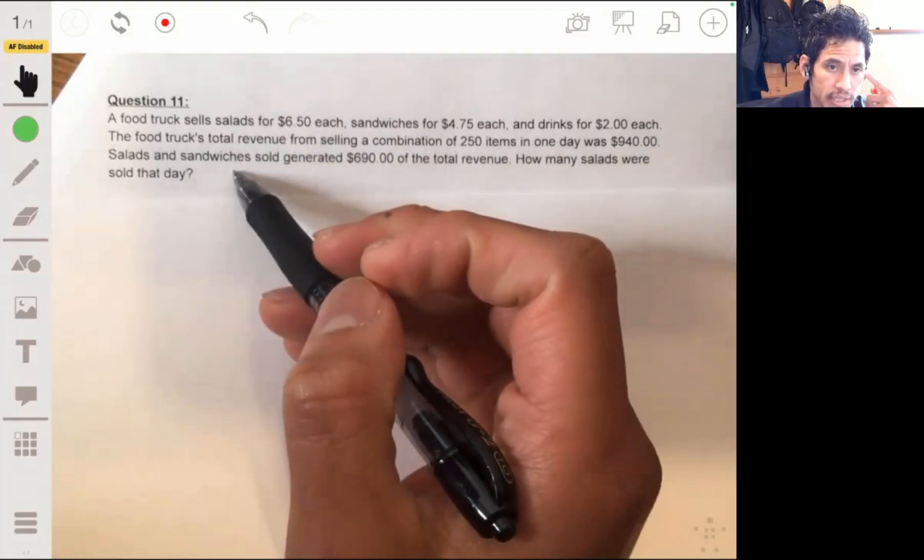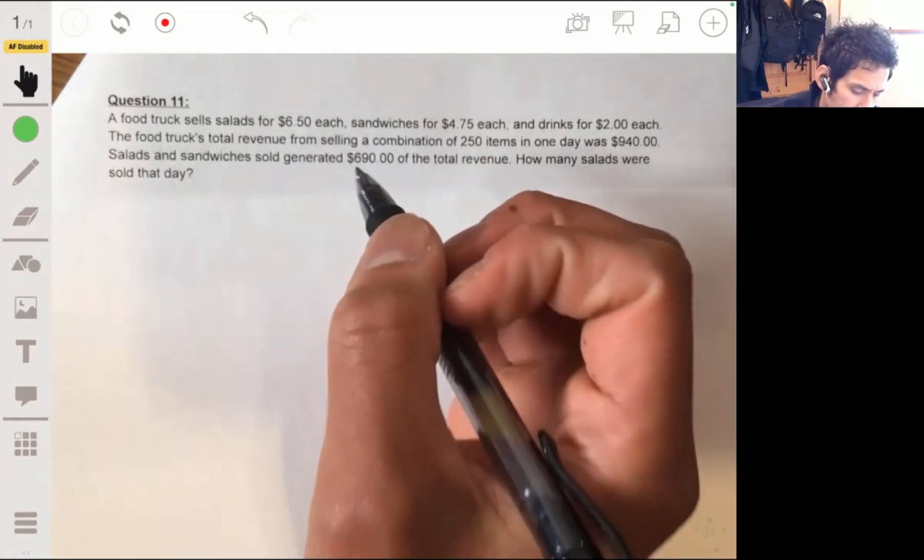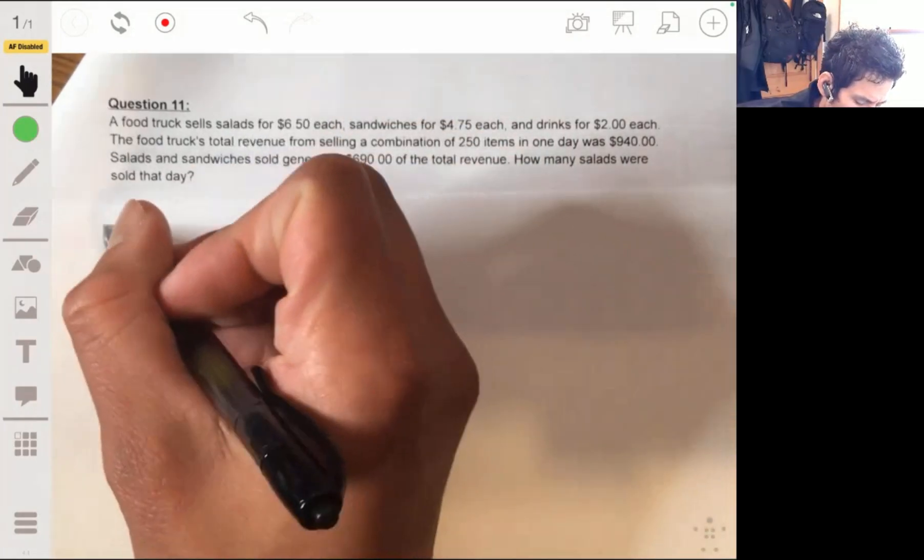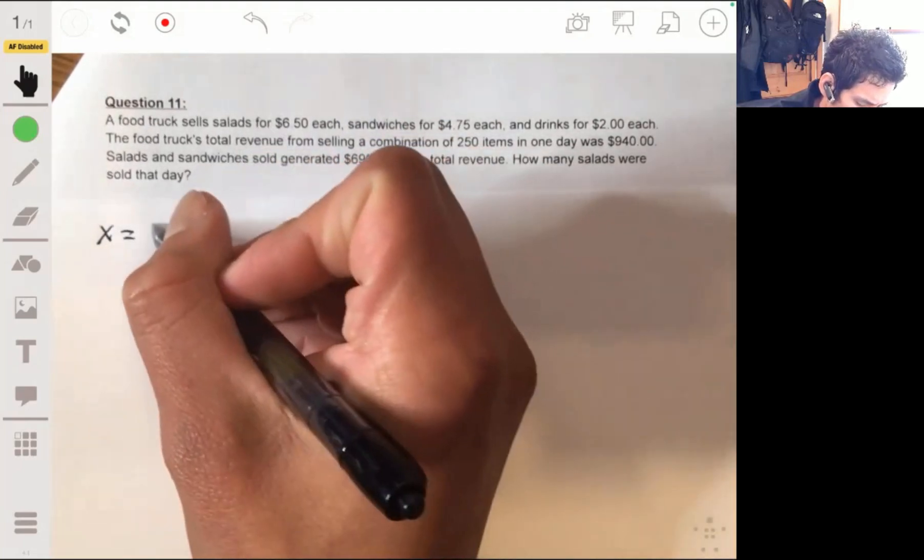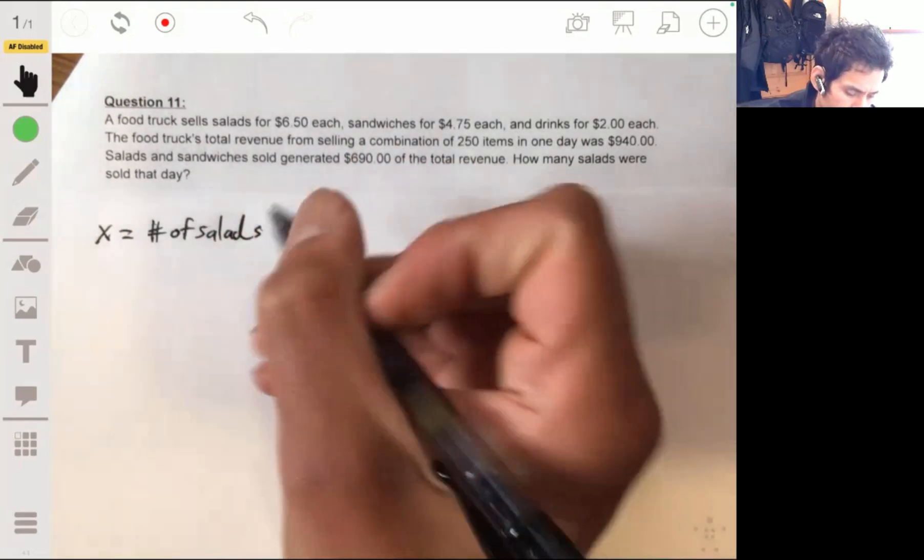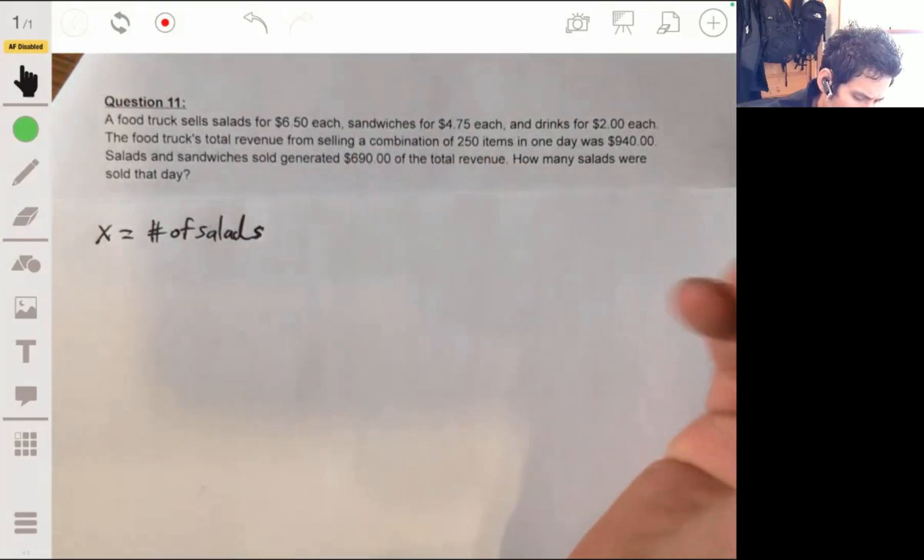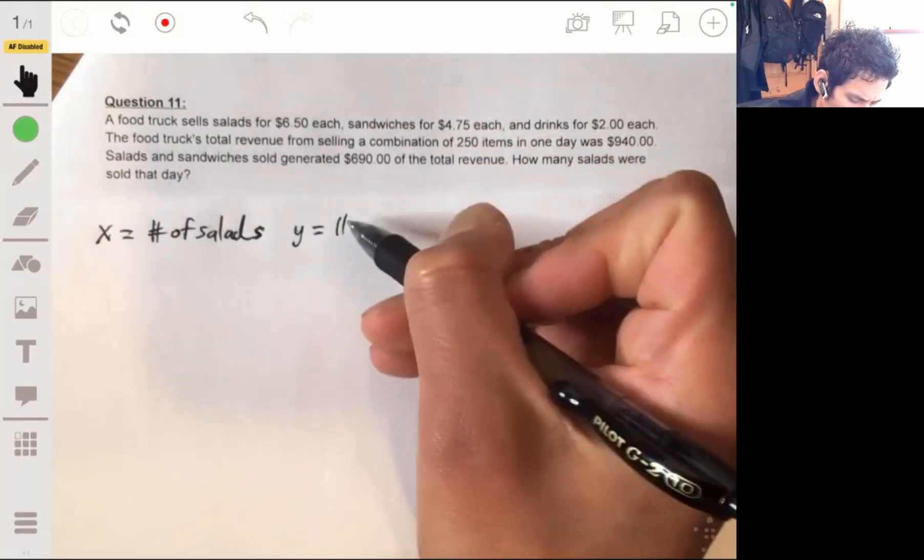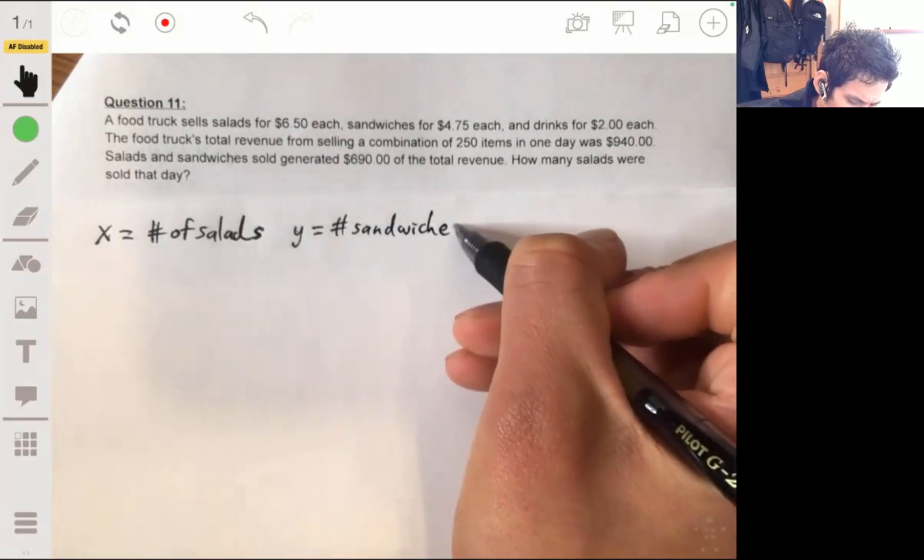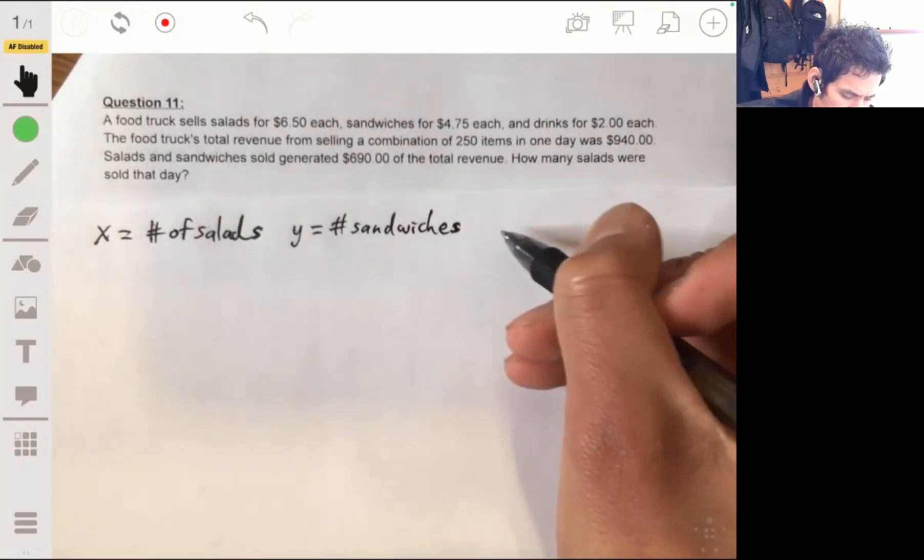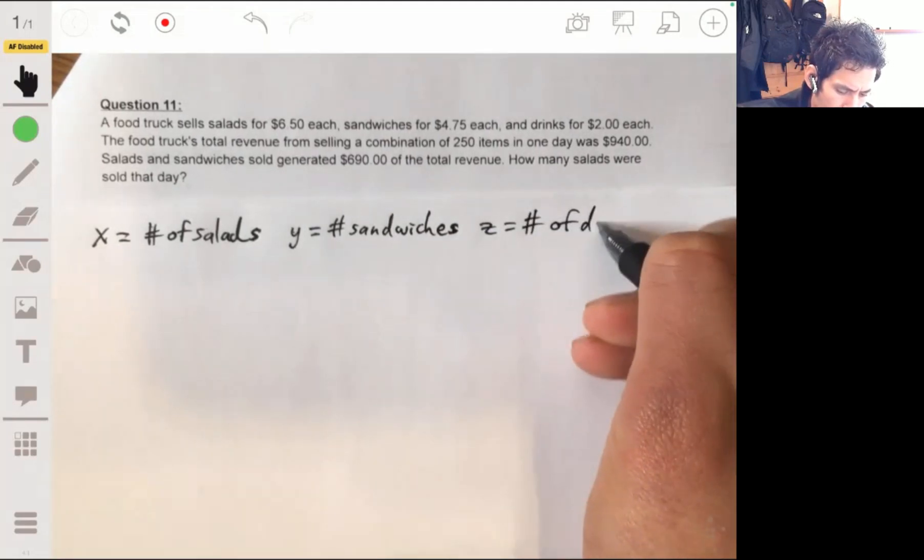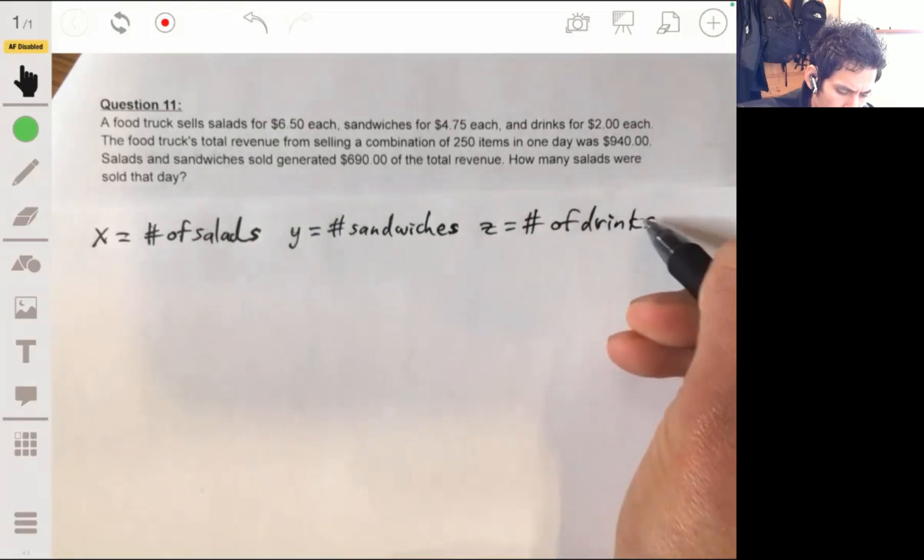How many salads were sold that day? Okay, so let's make it so that X represents the number of salads, and then we'll have that Y is the number of sandwiches, and then Z will be the number of drinks.